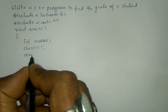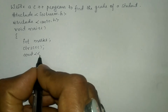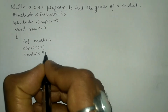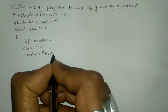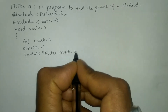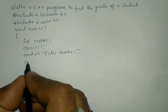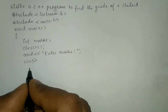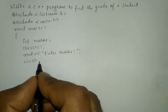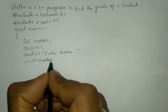Now let us ask the user to enter the marks using cout with the stream insertion operator. In double quotation marks I am going to write 'enter marks' and put a semicolon. We are going to get the response from the user through the keyboard using cin with the stream extraction operator and the variable name marks.